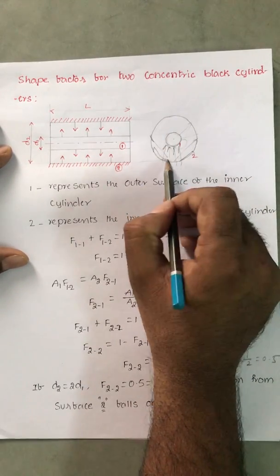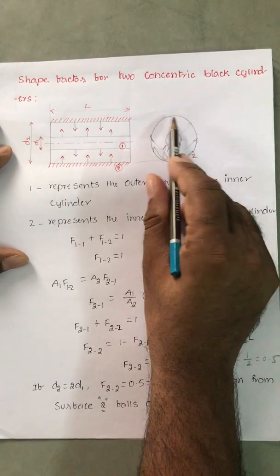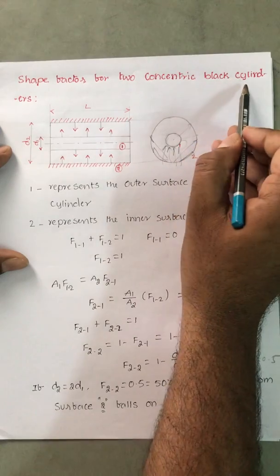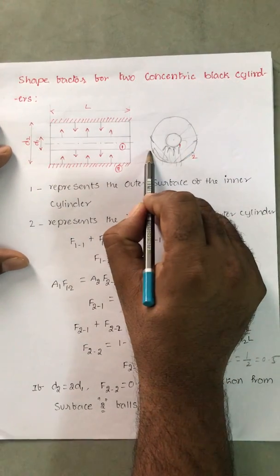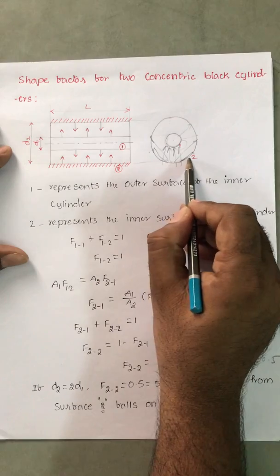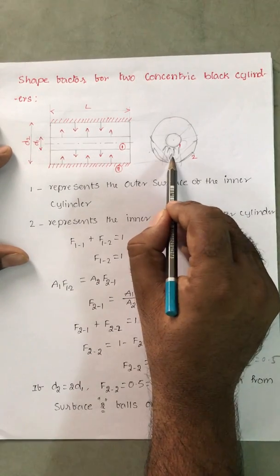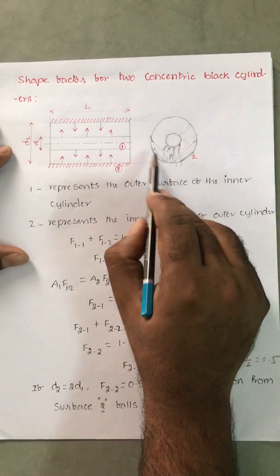Remaining 50% of the radiation energy which is emitted by cylinder 2 is striking the same surface itself. As it is a black cylinder, when it is striking, automatically it will absorb. So that means 50% of the radiative energy which is emitted from surface 2 will be absorbed by the same cylinder itself.